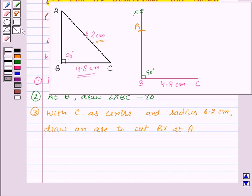Now join AC. So here AC is equal to 6.2 cm. Thus triangle ABC is the required right-angled triangle.